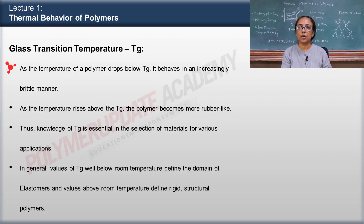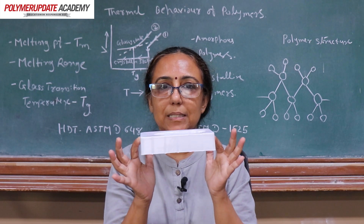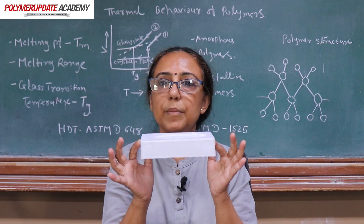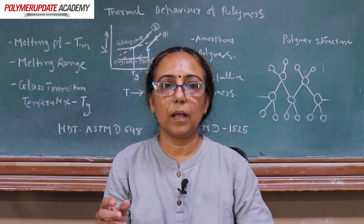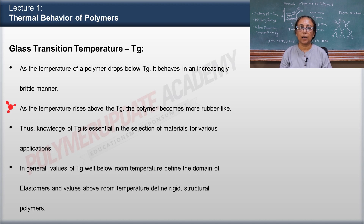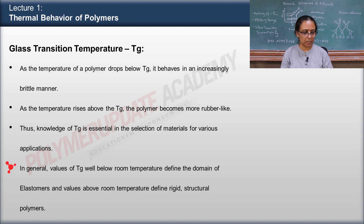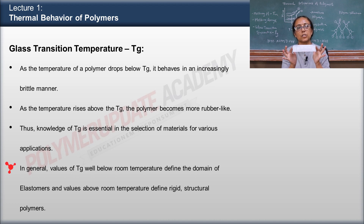As the temperature of a polymer drops below the glass transition, it behaves in an increasingly brittle manner. This material is having a glass transition temperature below the room temperature, and this material is having a glass transition above the room temperature. As the temperature rises above the glass transition, the polymer material becomes more rubber-like. Thus, knowledge of glass transition is essential in the selection of materials for various applications. In general, values of Tg well below room temperature define the domain of elastomers, while Tg above room temperature defines the domain of rigid structural polymers. That is how glass transition plays a role in deciding the final structure of any material.